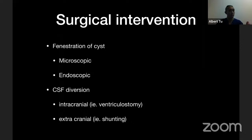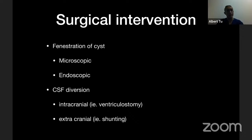So what do you do? How do we manage this? There's a million ways to skin a cat. Lots of different options: surgical options — you can poke a hole in the cyst, open with a microscope or with an endoscope — and you can do CSF diversion. If you don't want to treat the cyst directly, you can always shunt the ventricles, or even shunt the cyst itself. When we talk about CSF diversion, there are options where we shunt extracranially, or you can do an intracranial diversion — poking a hole in the fluid space and getting it to communicate somewhere else.